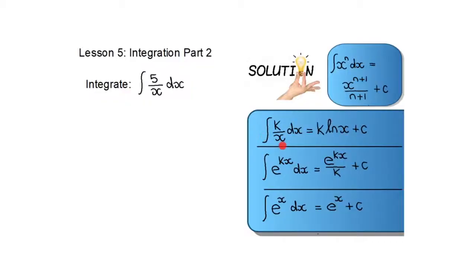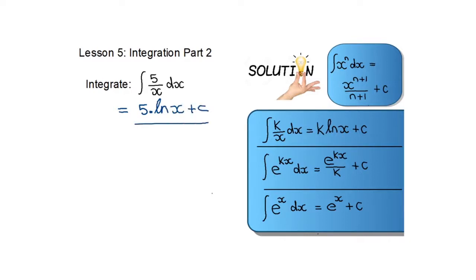The rule says: the integral of k over x — specifically when it is x to the power 1 — cannot use the standard x to the power n rule because you'd divide by 0. Instead, remember that the integral of k over x dx is k·ln(x) plus a constant. So for 5 over x, the answer is 5·ln(x) plus the constant, using the rule directly from the formula sheet.